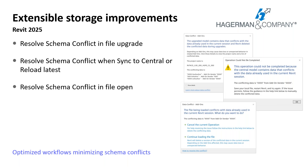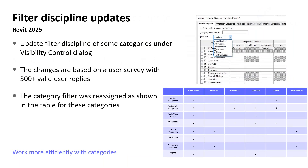In Revit 2025, extensible storage has been restructured to minimize schema conflicts and optimize workflows. Schemas used by add-ons may encounter conflicts when working with multiple files, and improvements have been made to handle schema conflicts when they occur. Based on customer feedback, the discipline filters in the Visibility and Graphics Overrides dialog have been modified — for example, audio-visual devices now show in both architecture and electrical filters, and mechanical equipment shows in architectural, mechanical, electrical, and piping filters.